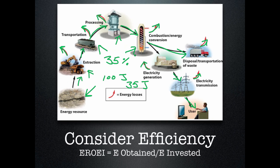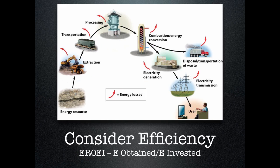When deciding on a fuel source, we need to consider the Energy Return on Energy Invested, or EROI. You take the energy obtained — for example, the final 35 joules — and divide it by the energy invested, the original 100 joules. Whatever number comes out is the EROI number. The higher the EROI number, the better the source of energy for the job.